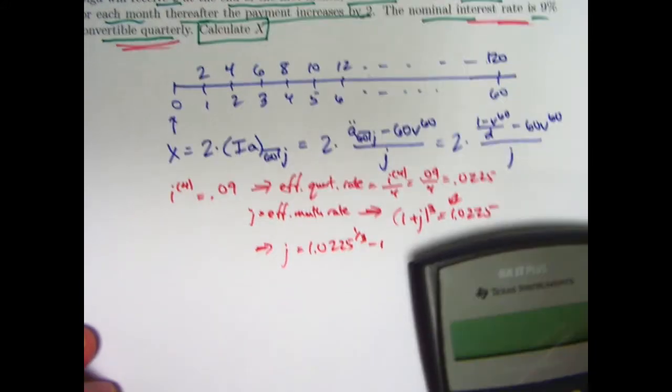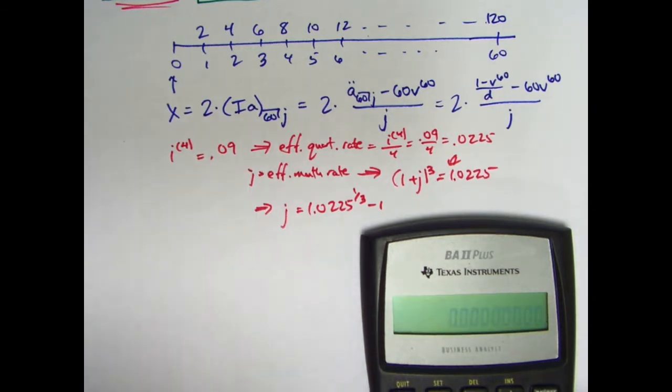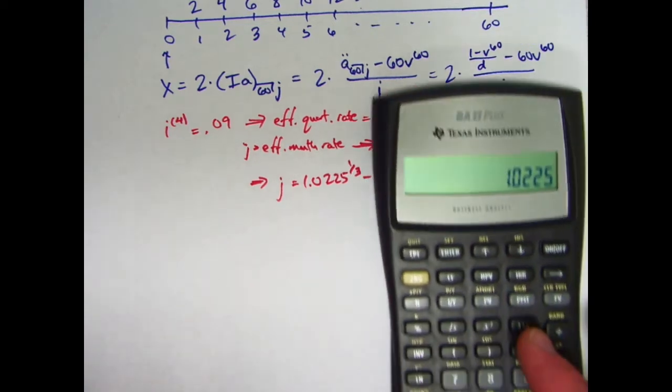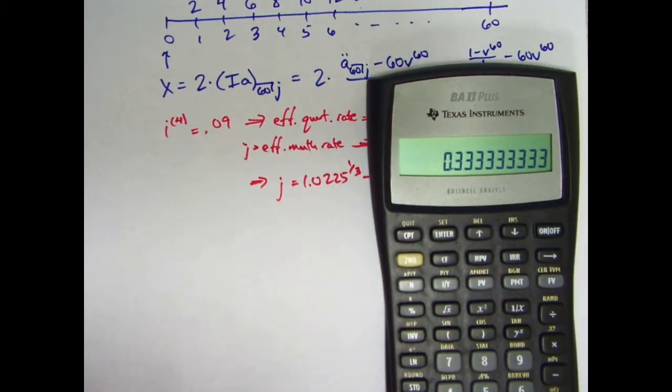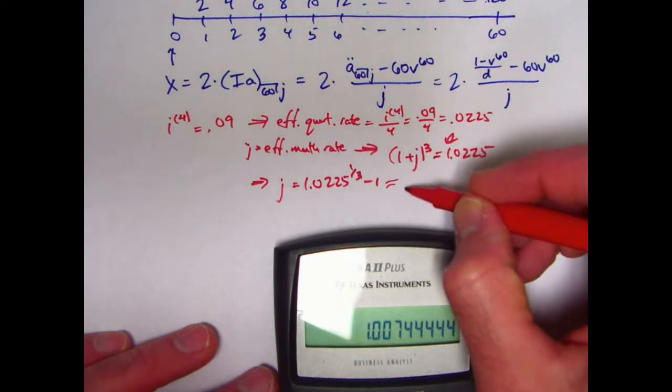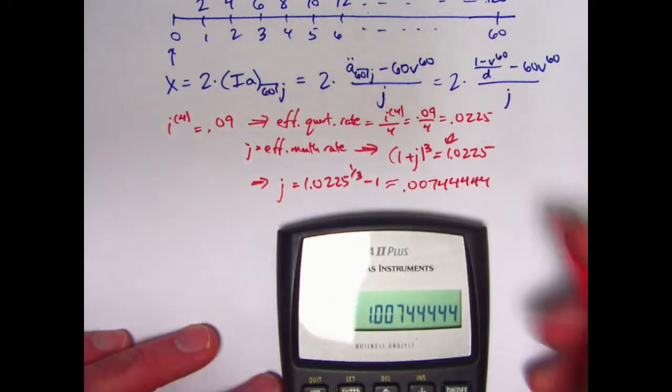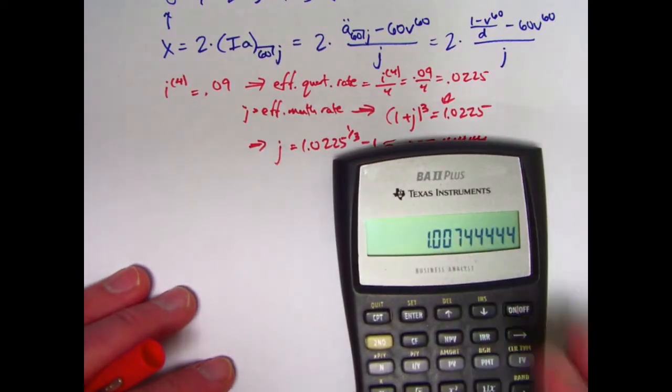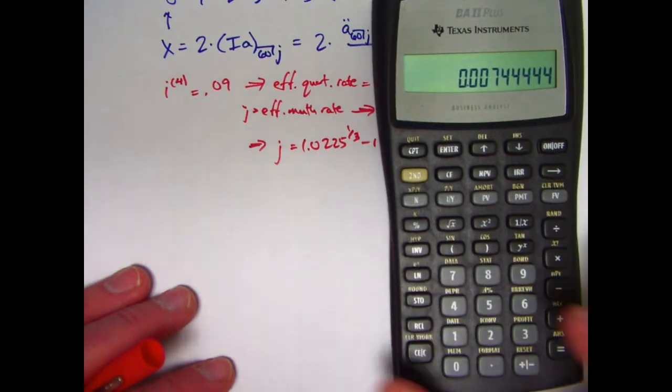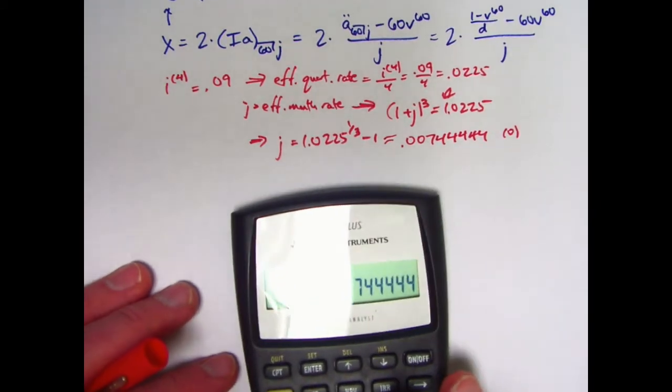Let's calculate that. The hardest part about this problem is just the calculator usage. The problem-solving aspect is not too bad. 1.0225, third root of that, raise it to the one-third power. I'll just type 0.3333333. And then subtract 1 from that. J is about 0.007, looks like a 4 repeating. This is going to be an irrational number, but approximately that will be good enough. I will store the value of J in register 0.